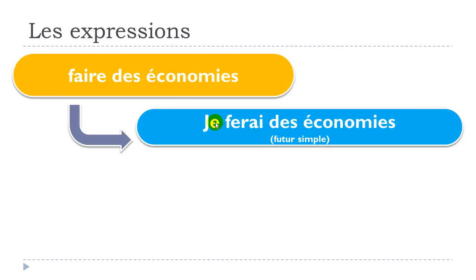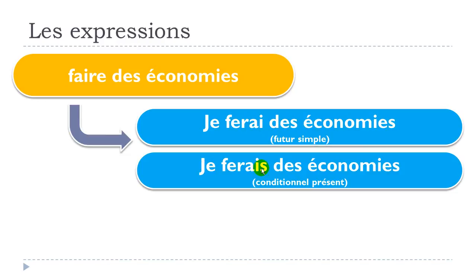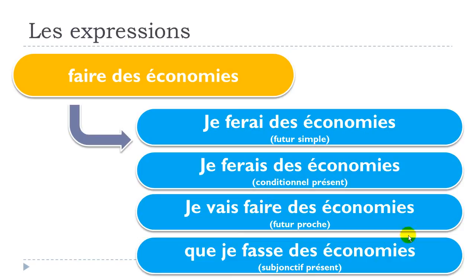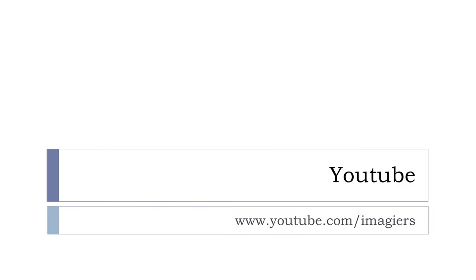Now a few other tenses. Le futur simple: je ferai des économies. Le conditionnel présent: je ferais des économies — written differently but phonetically the same. Le futur proche: je vais faire des économies. Le subjonctif présent: que je fasse des économies. Et voilà, merci, au revoir et à bientôt!